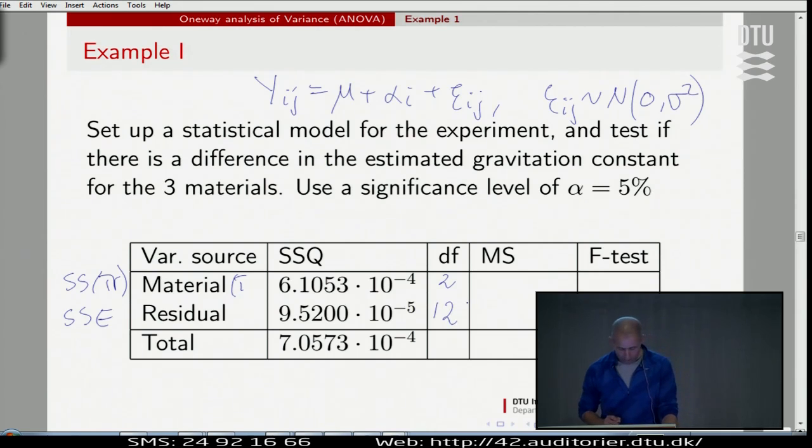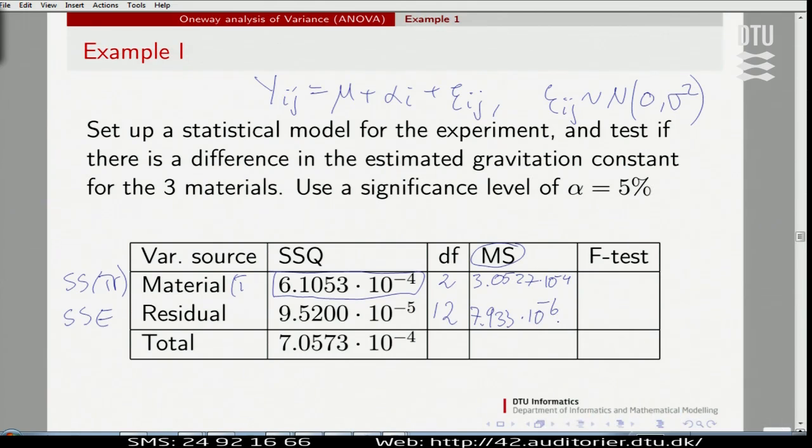Twelve. So we take this six point something, we take this number, divide by two to get the mean square. That will then be 3.0527 times ten to the minus four. Still a small number. We take this 9.5 divided by 12. That then becomes 7.933 times 10 to minus 6. We compute the F test, which is those two numbers divided by each other. So this number is 3.0527 times 10 to the minus 4 divided by 7.933 times 10 to the minus 6. If we take those two numbers, divide by each other, we get the number 38.479.